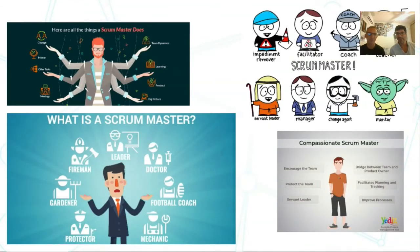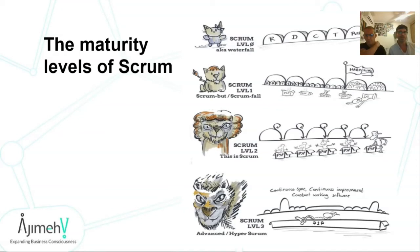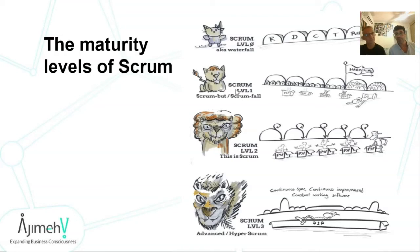There's a lot online when you search 'Scrum Master' — you see the gardener who grows people, the football coach, the mechanic, the guy who encourages the team. Let's look at Scrum levels. Level zero is a big sprint of requirements, then a big sprint of design, then code, then testing, and then the project dies — which is basically waterfall.